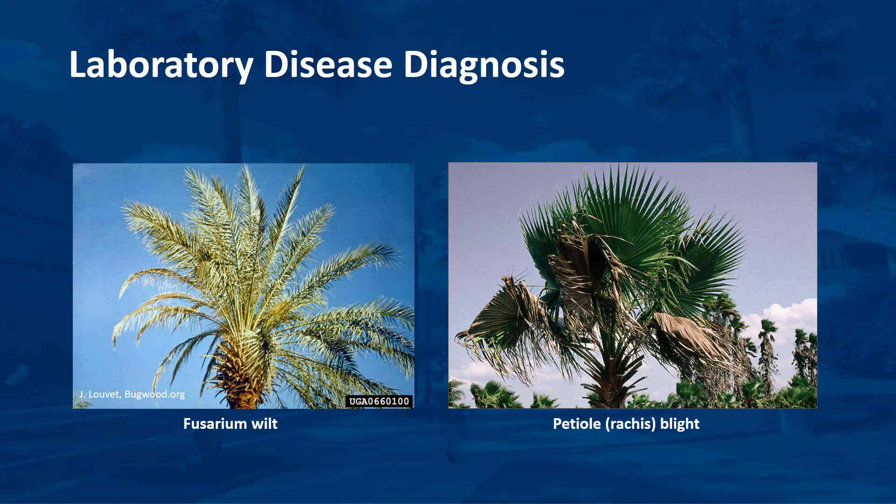Only the University of Florida currently offers these services in Florida. Sampling the correct tissue is critical for an accurate laboratory diagnosis. For example, lethal yellowing is confirmed from internal trunk corings, while petiole blight pathogens only infect the palm leaf petiole rachis. In both cases, sampling leaflet tissue of a palm affected by either of these diseases would have yielded a false negative. Thus, it is imperative to make the field diagnosis as accurate as possible in order to determine which tissue to sample.